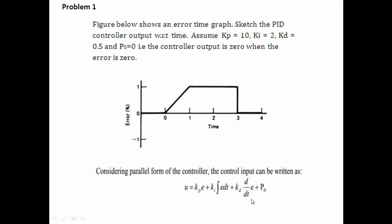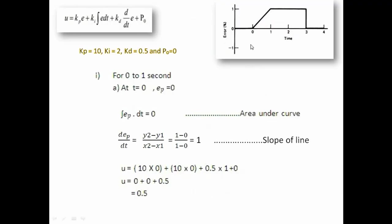For easy understanding, the same image is kept here along with the equation for parallel form. Looking at the error plot: from 0 to 1 second, the error changes in a ramp from 0 to 1 percent. From 1 to 3 seconds, the error is constant at 1 percent. From 3 to 4 seconds, the error drops down to 0, and beyond time 3 it remains at 0.